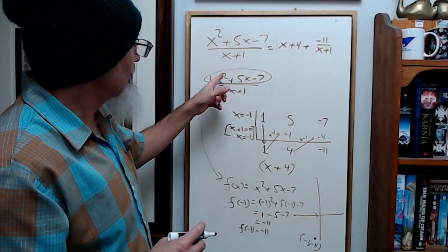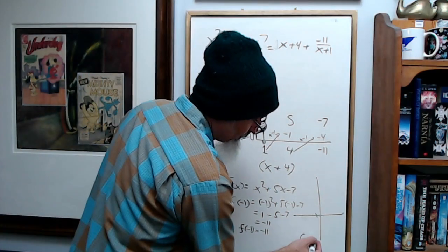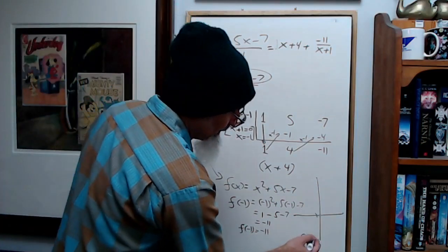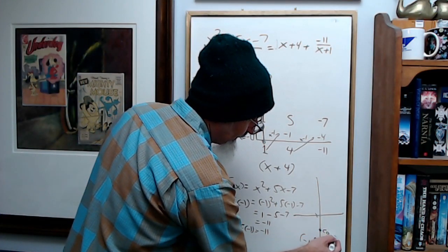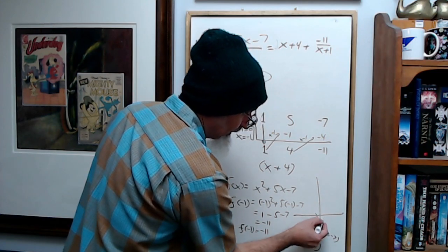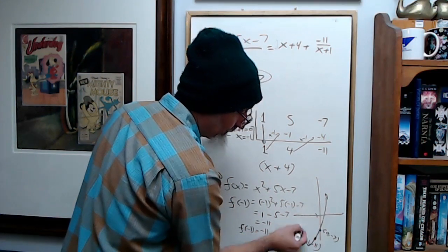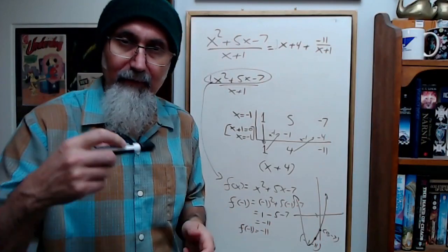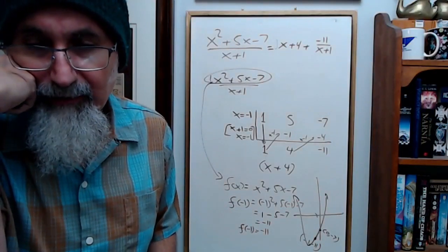This is a parabola that opens up. The y-intercept is negative 7, here's negative 7 at (0, negative 7). So the graph looks like this. I don't know where the vertex is, I would have to do completing the square to find the vertex on it.